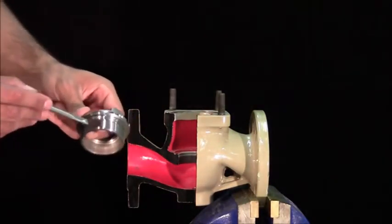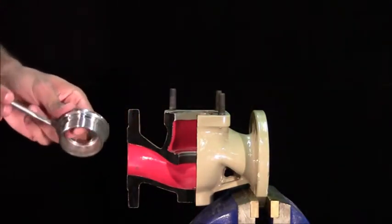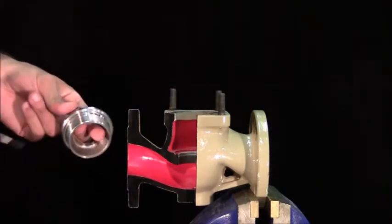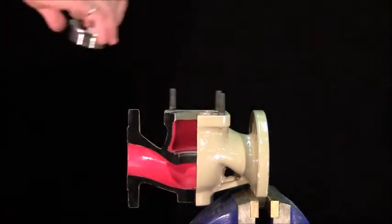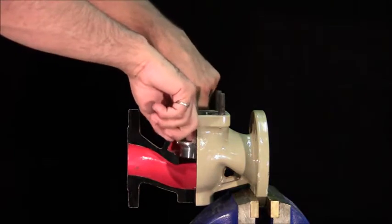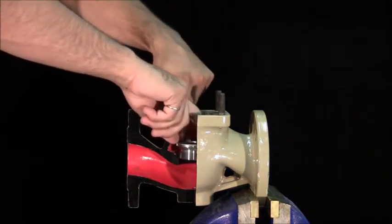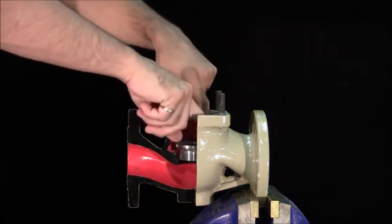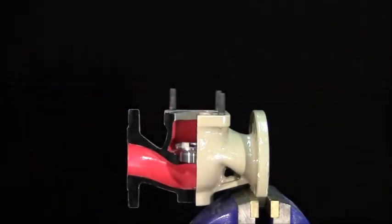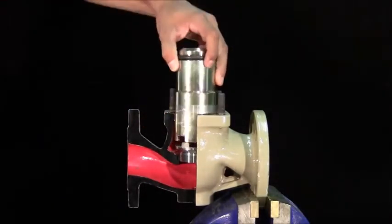We'll begin by lubricating the threads of the seat before inserting into the body. The seat will easily spin until it contacts the valve body.